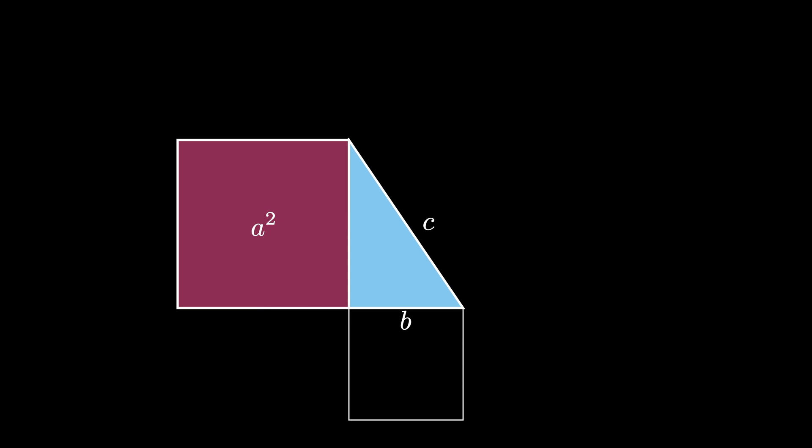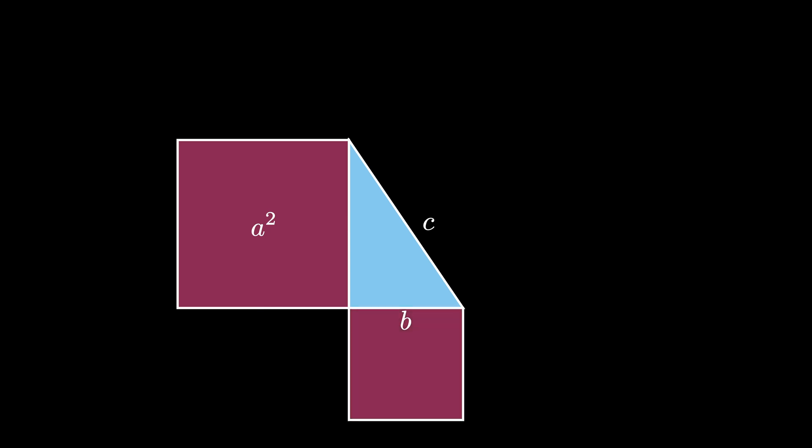Similarly, off of the leg of length b, draw a b by b square with area b squared. So the total area contained in these two squares is a squared plus b squared.